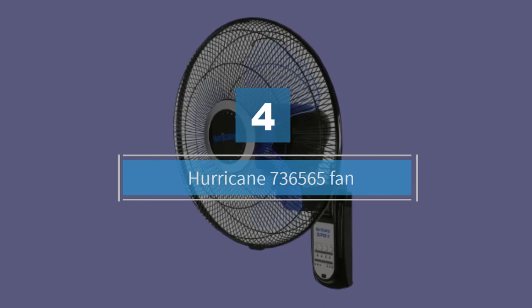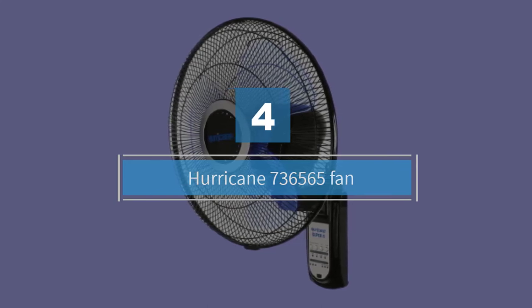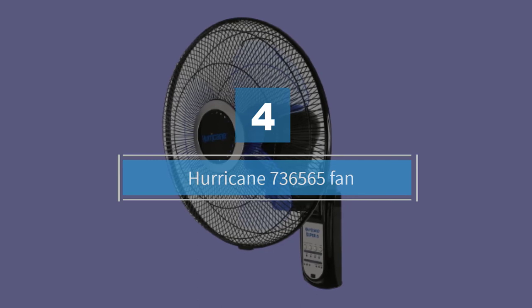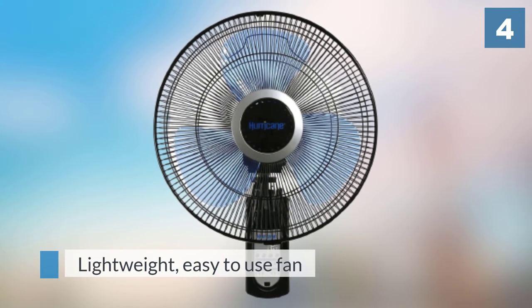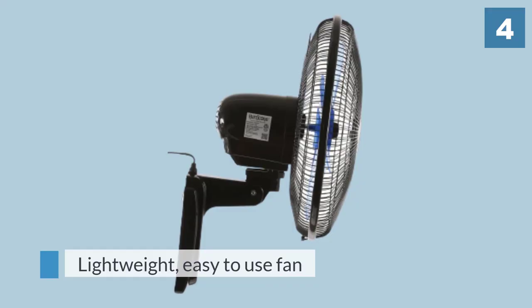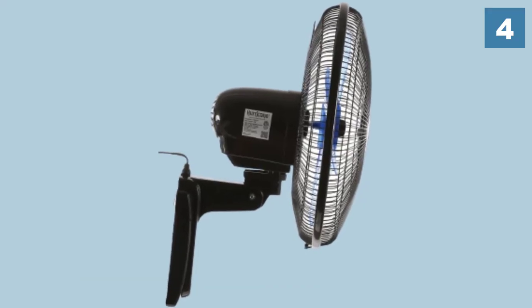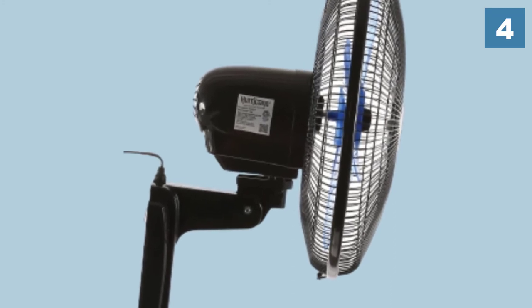Number four: Hurricane 7365653 Fan. It is a lightweight, easy to use fan. One of its best features is a built-in timer, so you can set when and how the fan will run. This will help to get your garage to a comfortable temperature before you ever step foot into it for the day.